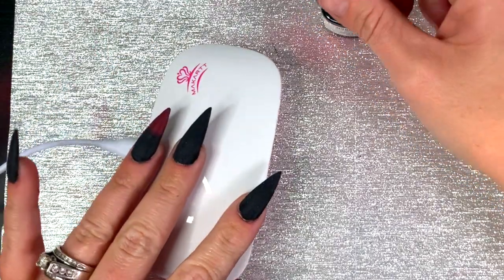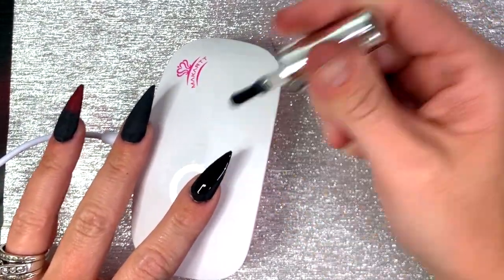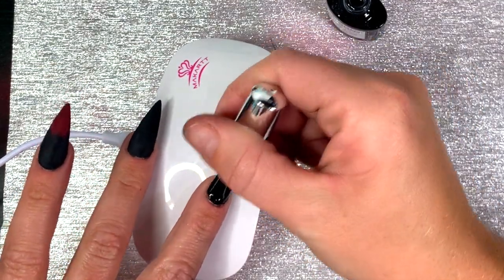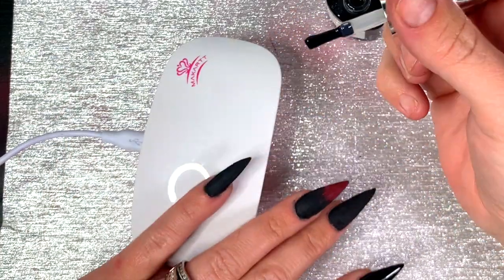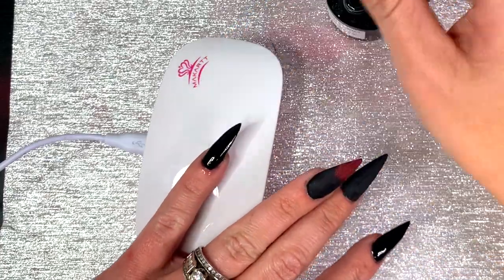Now comes the fun part. I'm going to take a matte top coat from Model Ones and I'm going to put that on the nails that we're going to put the blood on. I want the blood to be with that sparkly foil so doing a matte coat will really make those pop even more. I'm just going to stick that in my lamp, cure for 90 seconds. Now our index and pinky is ready for the blood drips.